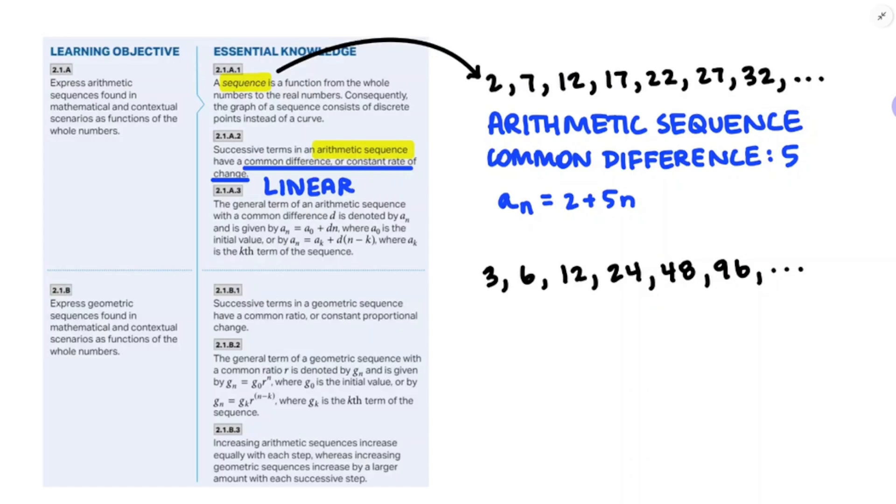And then we also want to think about a geometric sequence. And the thing about a geometric sequence is that there's a common ratio or a constant proportional change. We've seen this in this class. This is an exponential pattern. Each time the next term is doubled the previous term. So this 3, 6, 12, 24, that's going to be a geometric sequence.